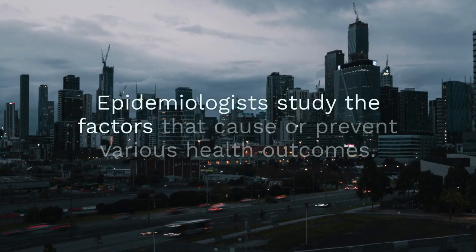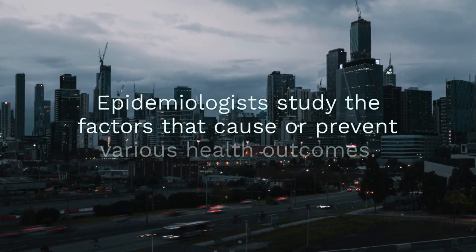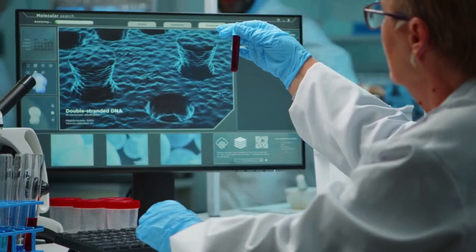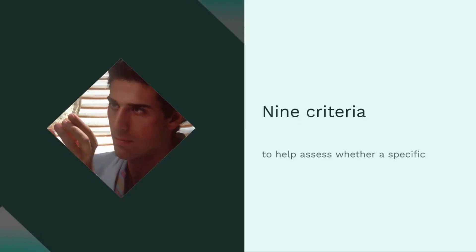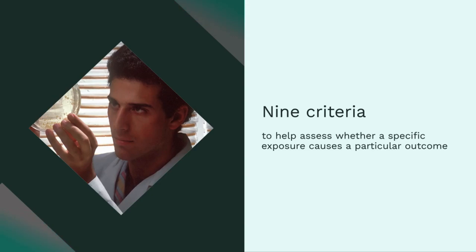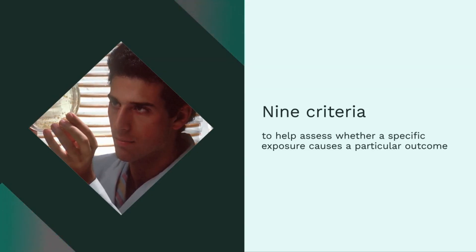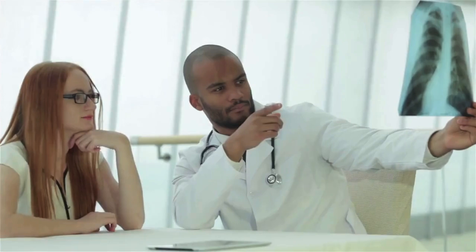Epidemiologists study the factors that cause or prevent various health outcomes. Determining causality in public health is a complex process that relies on established guidelines rather than a single test. In 1965, Austin Bradford Hill introduced nine criteria to help assess whether a specific exposure causes a particular outcome. These criteria serve as guidelines rather than strict rules, meaning causality can still be established even if not all criteria are fully met.